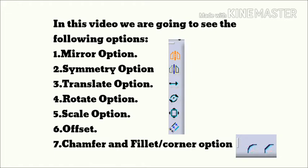The sixth one is offset — if you want to change the position of any object, you can use this option. The seventh one is chamfer and fillet — if you want to give a curve or a chamfer to an object, you can use this option. The icons are shown in front of you.